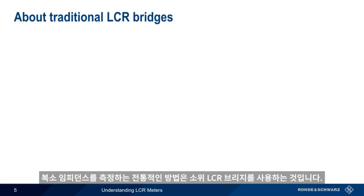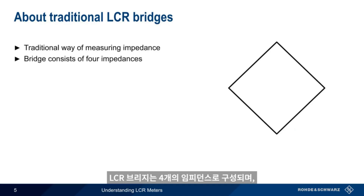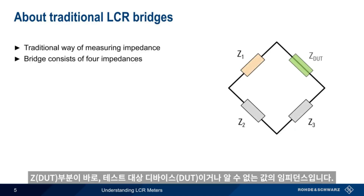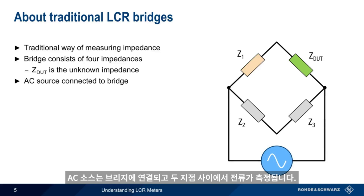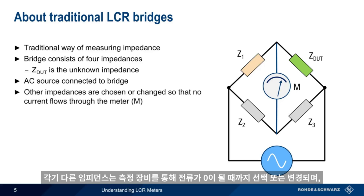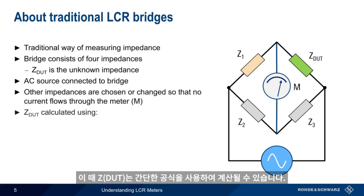The traditional method for measuring a complex impedance is using a so-called LCR bridge. An LCR bridge consists of four impedances, with Z being the device under test or unknown impedance. An AC source is connected to the bridge, and the current is measured between two points. The other impedances are chosen and/or changed until the current flowing through the meter is zero, at which point Z can be calculated using another simple formula.